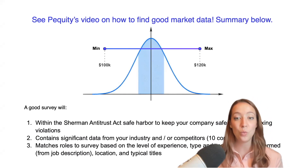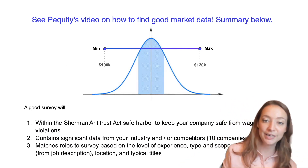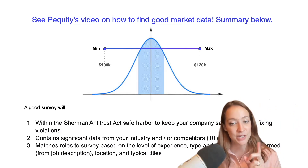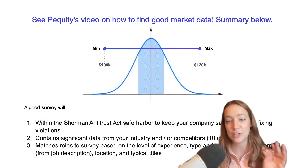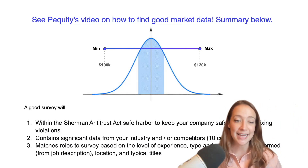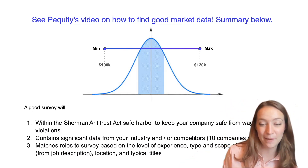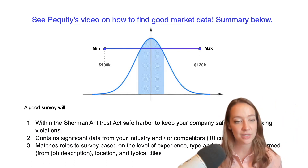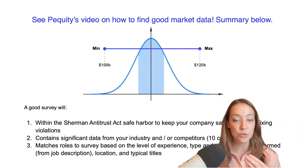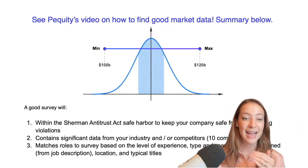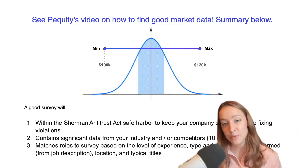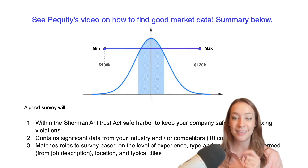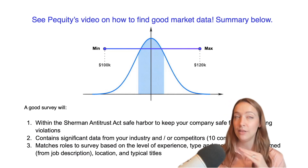As a reminder of what good market data is, it needs to be in the safe harbor of the Antitrust Act — so aggregated correctly, at least three months old. There's no such thing as real-time data. You also need to make sure it contains significant data from your industry and or competitors — we recommend 10 companies. You can ask the surveys to confirm who submits, as they usually send a list of participants. You also want to make sure they're taking due diligence to match roles based on experience, type of work being performed, and location and typical titles. Ask the company how they ensure the aggregation method is accurate and how they ensure companies are submitting in a consistent fashion. That'll tell you a lot and save you a lot of headache and money down the road.